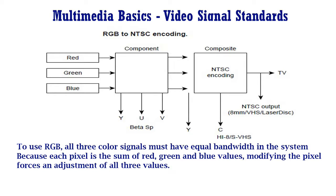Second, because each pixel is the sum of red, green, and blue values, modifying the pixel forces an adjustment of all three values. In contrast, when images are stored as luminance and color formats, i.e. Y, U, V format, a pixel can be altered by modifying only one value. Component video maintains separate channels for each color value, both in the recording device and the storage medium. Component video delivers the highest fidelity because it eliminates noise that would otherwise occur if two signals were combined in one channel.